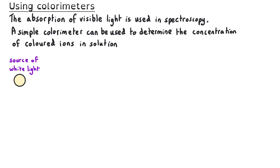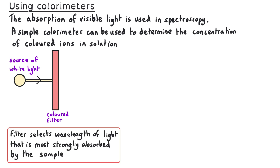A simple colourimeter will have a source of white light that emits light of all different frequencies. Then we have a coloured filter which absorbs the majority of light and selects the wavelengths most strongly absorbed by the sample. In this case I'm showing a red filter, which will absorb all frequencies of light except red. The sample is placed in a container — here I'm choosing a blue sample, which is why I've selected a red filter, because blue samples absorb red light very well.